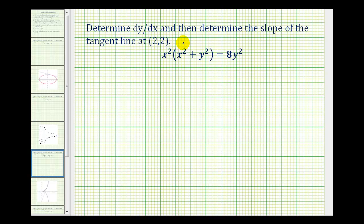We want to determine dy/dx and then determine the slope of the tangent line at the point (2,2). Notice our equation is an implicit equation because it's not solved for y.